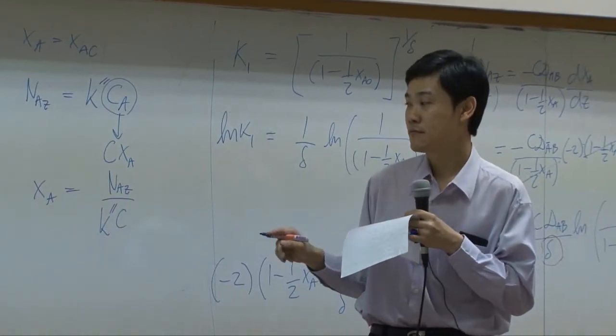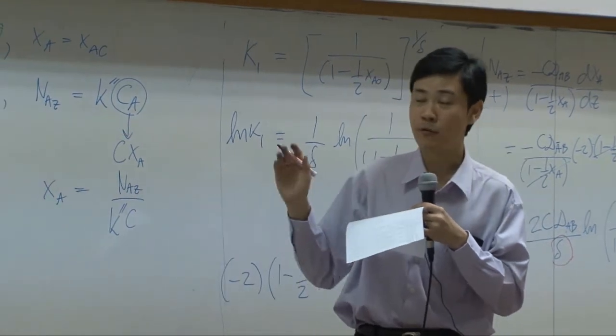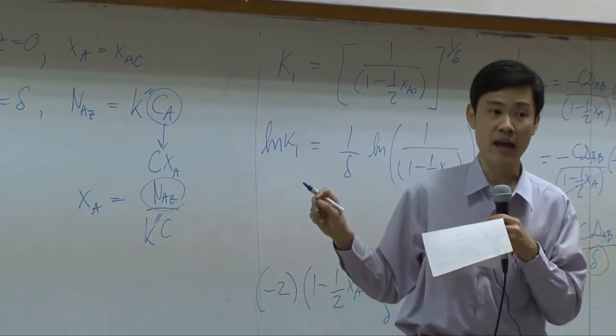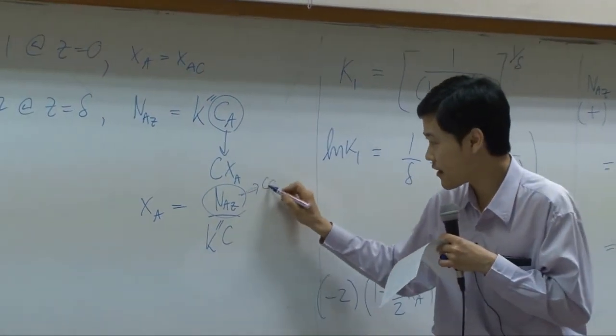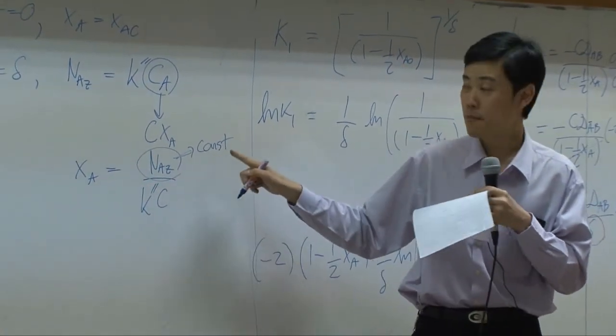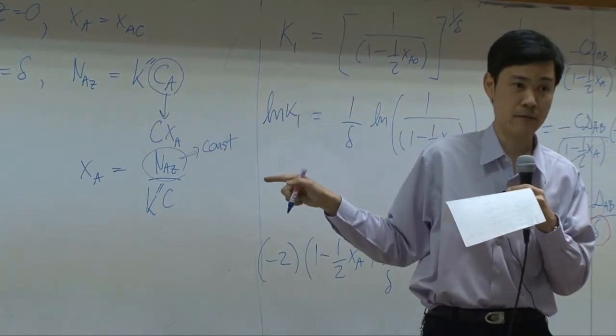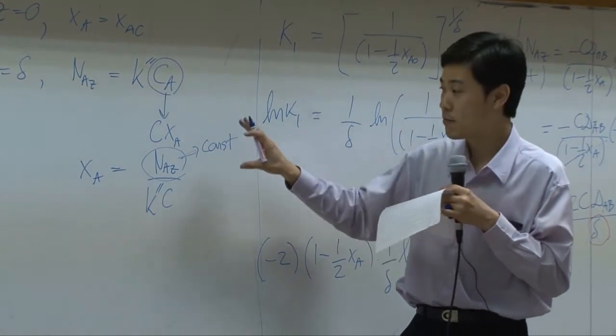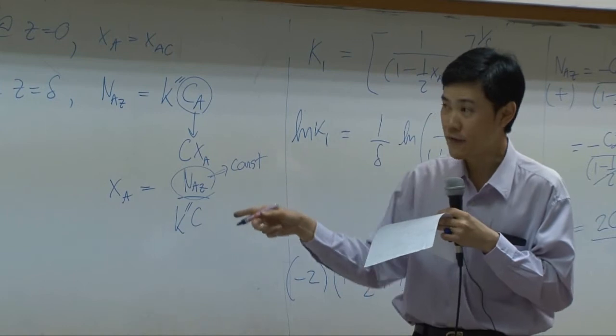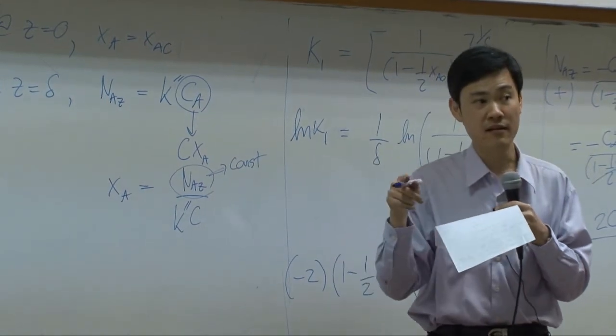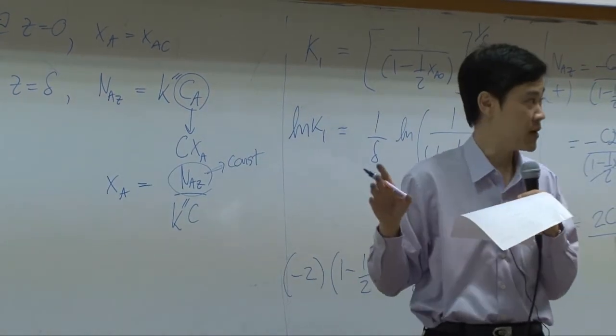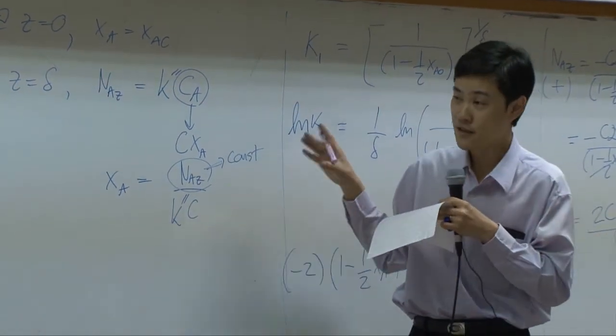However, by doing that it creates complication, because n_az is not a known number yet. Even though n_az is constant according to the shear balance, it is unknown at this moment. So when you plug it back, you still get one unknown. In order to solve that, you need to calculate in iteration, solve it repeatedly so that the solution converges.